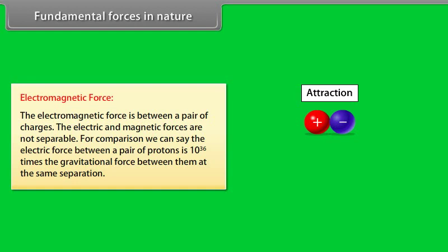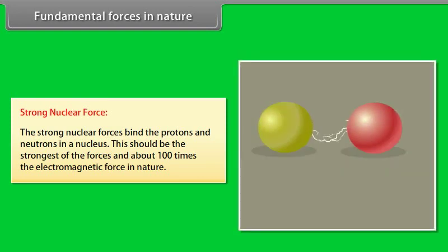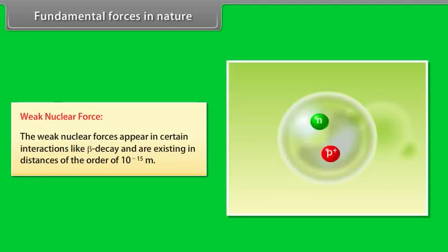The strong nuclear forces bind the protons and neutrons in a nucleus. This should be the strongest of the forces and about 100 times the electromagnetic force in nature. The weak nuclear forces appear in certain interactions like beta decay and are existing in distances of the order of 10 raised to the power minus 15 meter.